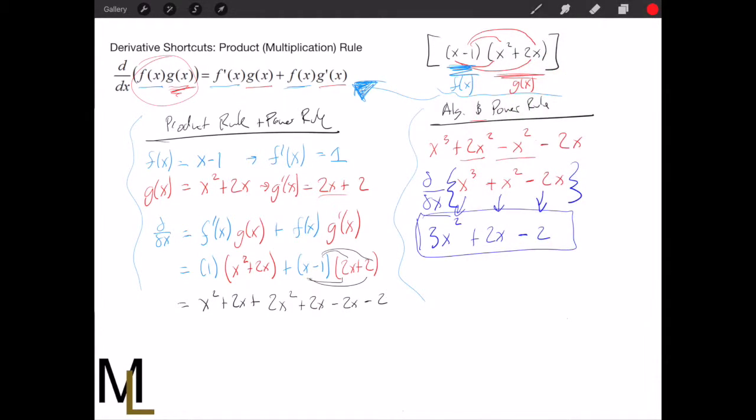And you can see these two cancel. Then we can actually combine these terms. So combining these, we're going to get 3x² + 2x - 2.